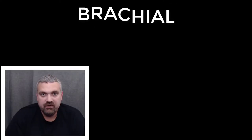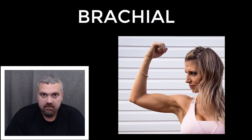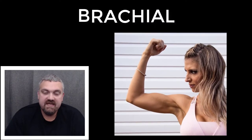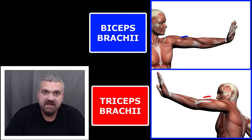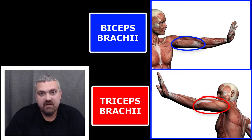First we have brachial. Your brachium is your upper arm. Two key examples here would be the biceps brachii on the front of the upper arm and the triceps brachii on the back of the upper arm.